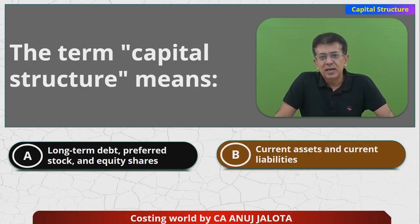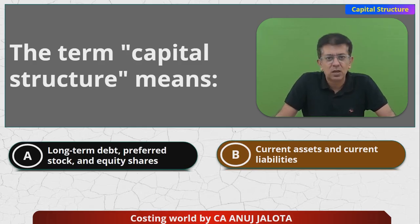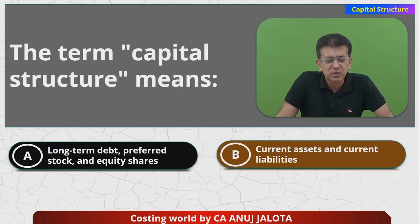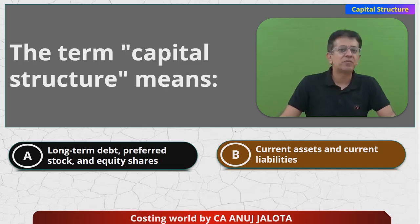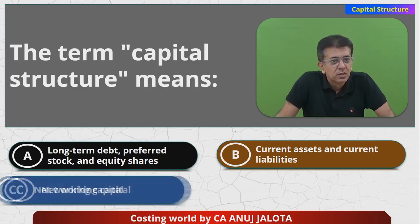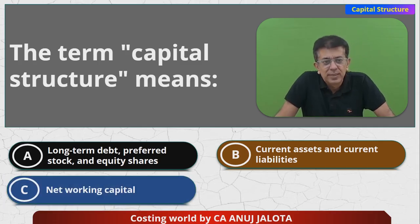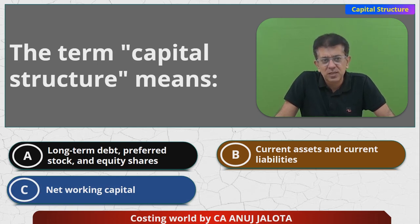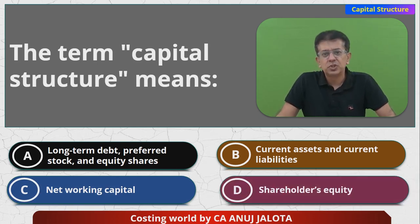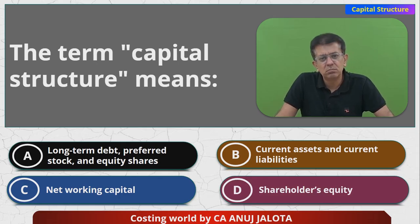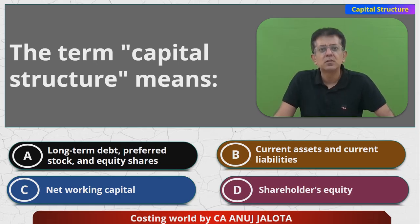Option B: current assets and current liabilities. Current assets and current liabilities actually will mean working capital. Option C: net working capital — so B and C are actually the same. Option D: shareholders equity — shareholders equity will mean equity only, that is equity shareholders funds.